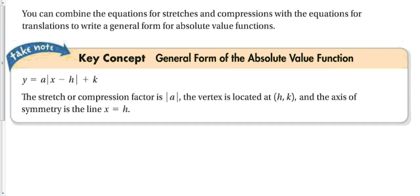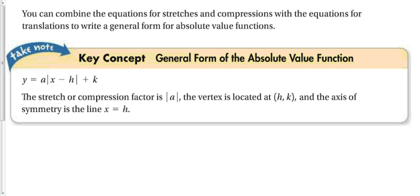Combining all these gives us the general form of an absolute value function: y = A|x − H| + K. The stretch or compression factor is |A|. A negative sign out front is a reflection. The vertex is located at (H, K) — positive H — because the negative sign inside the function indicates the function moved to the right. The axis of symmetry is x = H, which is the x-coordinate of the vertex.